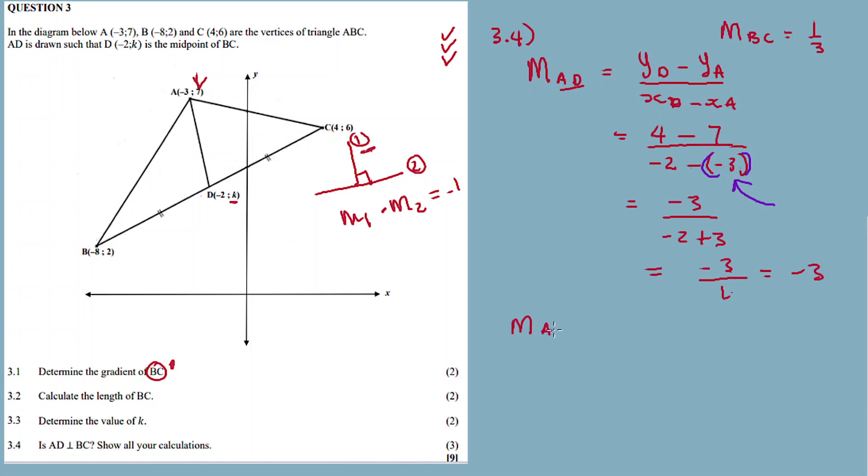Then you multiply the gradients. Gradient AD, negative 3, multiplied by gradient BC, which is 1 over 3. When you multiply these, you get minus 1. Therefore, AD is perpendicular to BC. This is our conclusion. This is how you prove perpendicular lines.